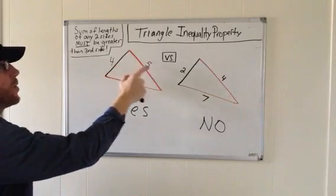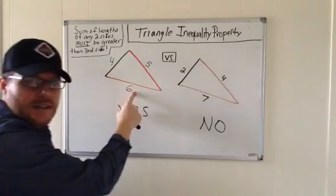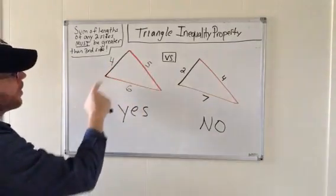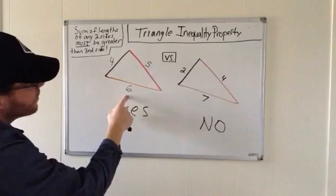So for example, four plus five is nine, nine is greater than six. Six plus five is eleven, eleven is greater than four. Four plus six is ten, ten is greater than five.